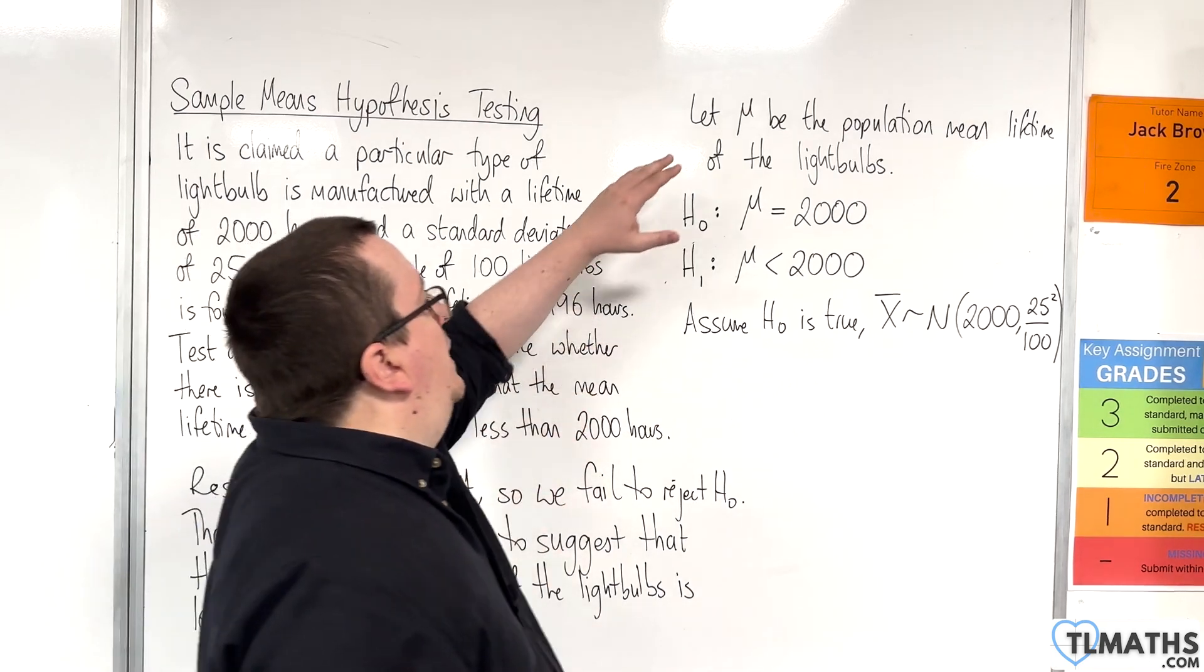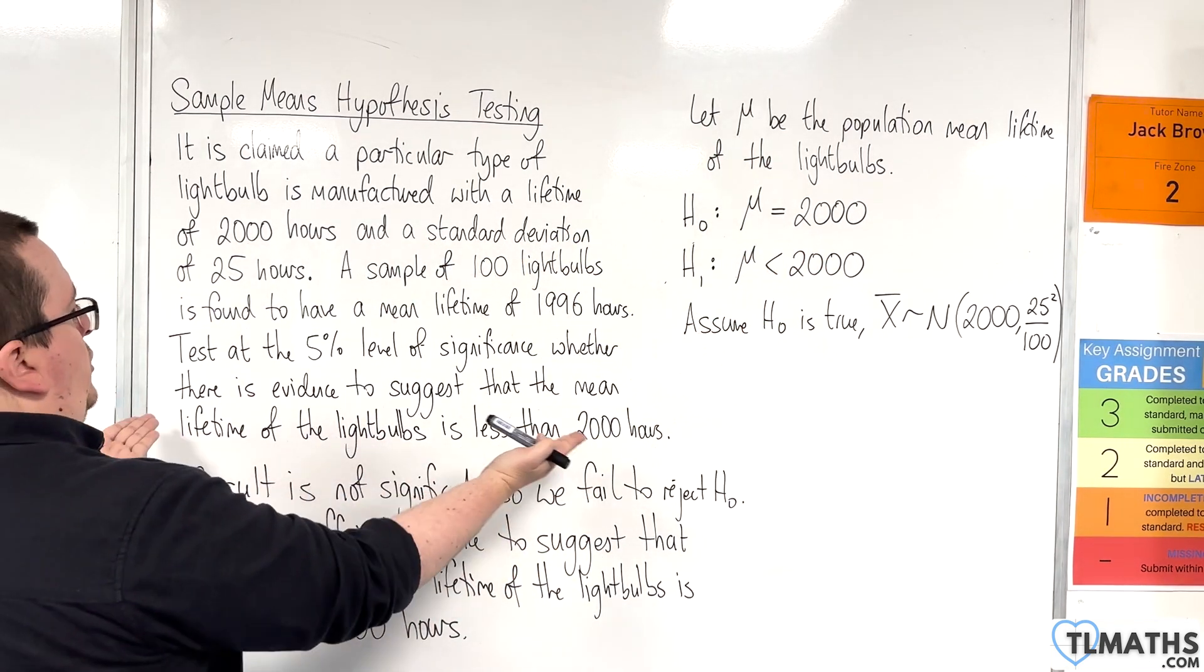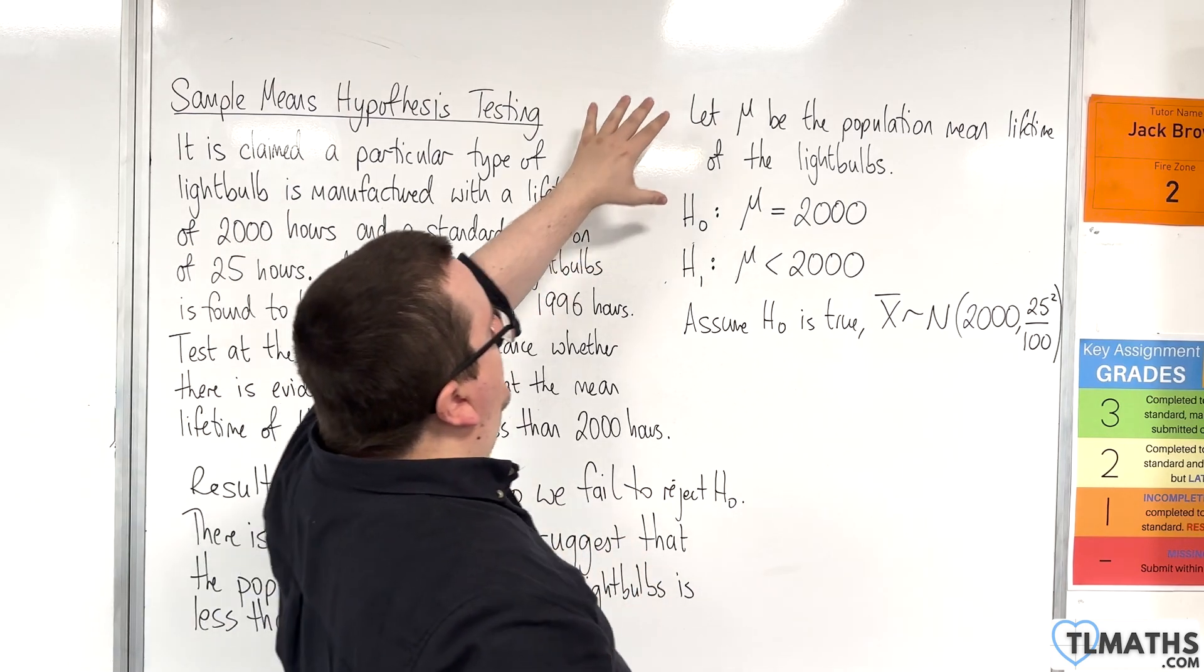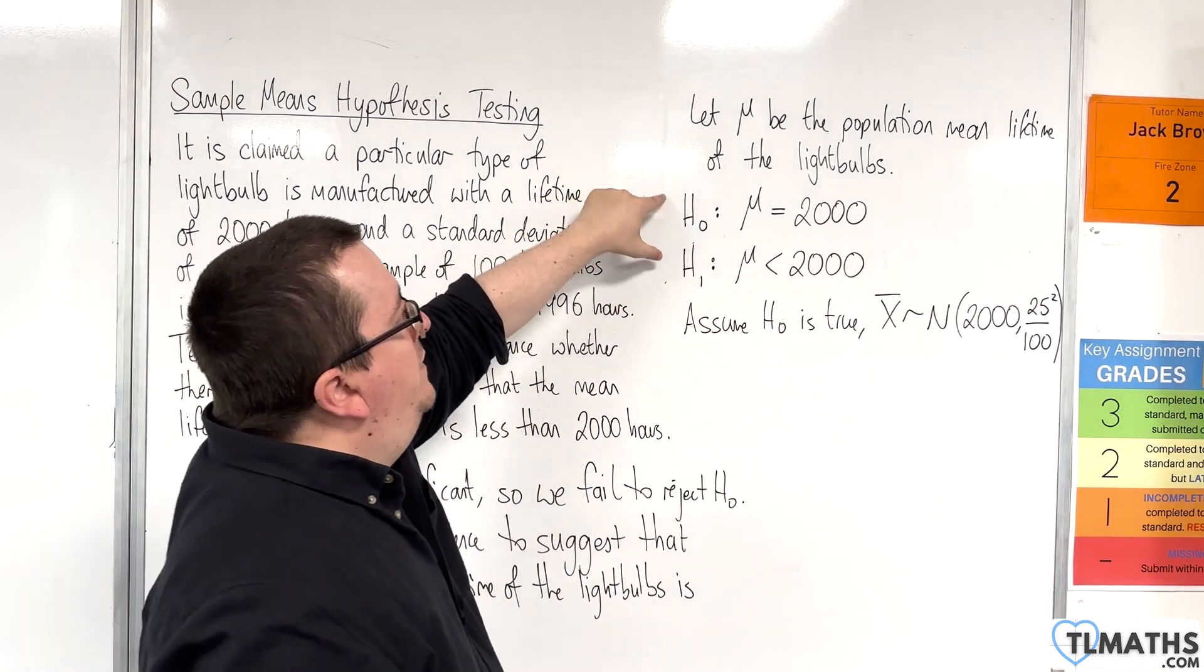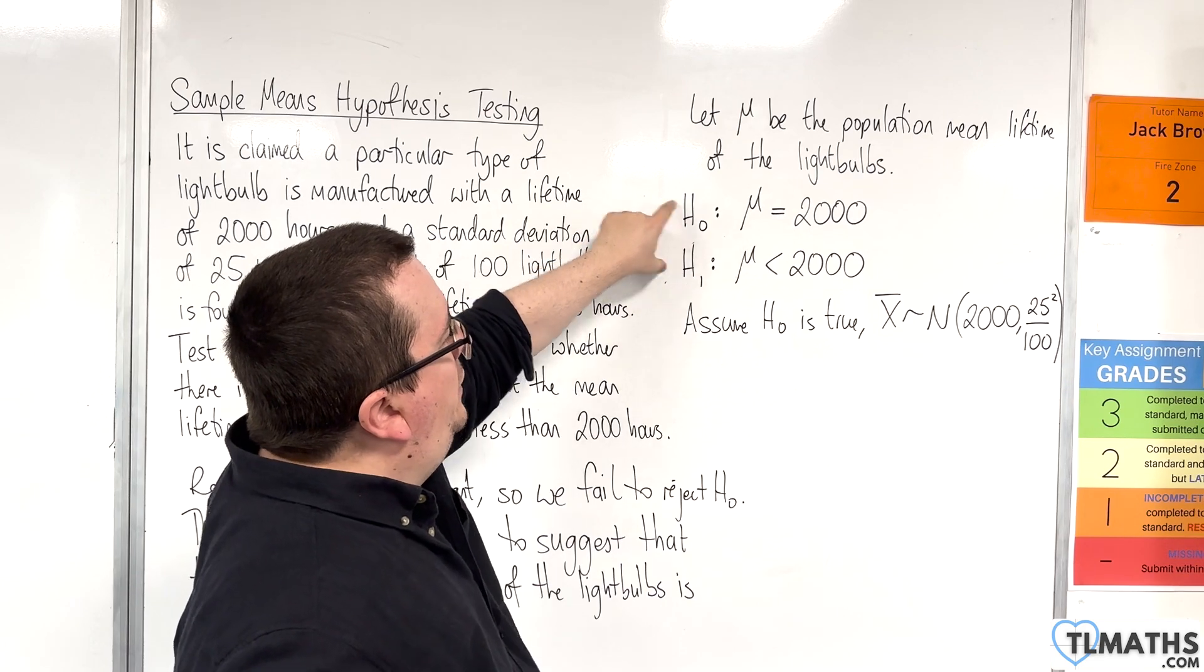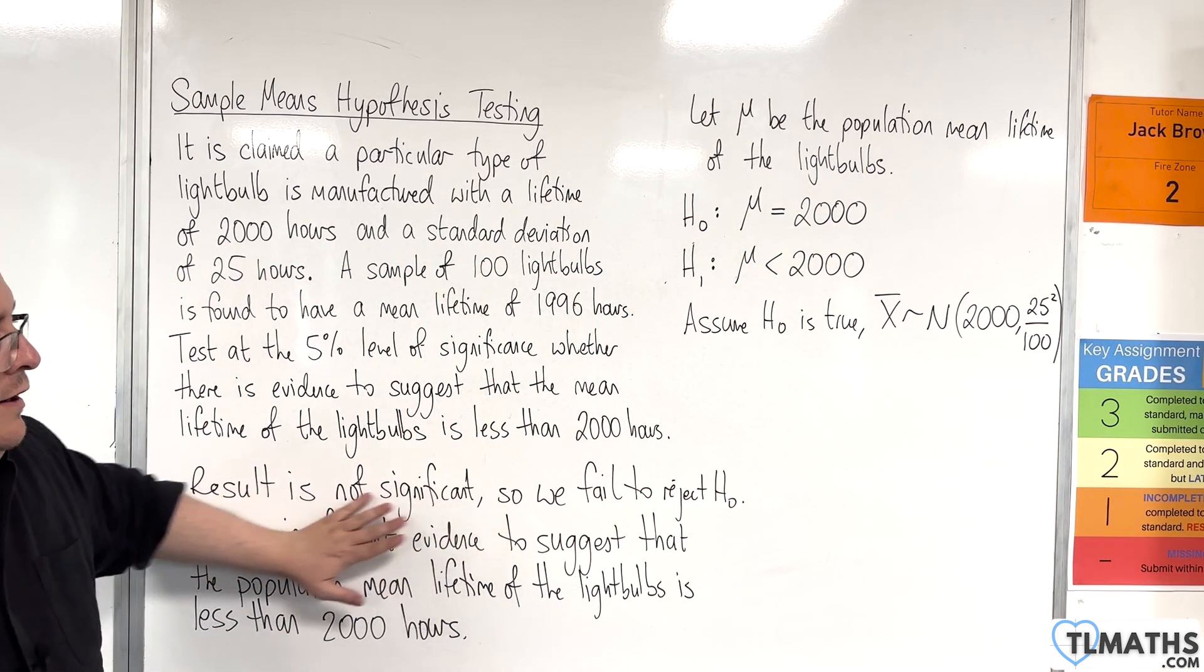I've saved everything that we had previously. So, here is your question. And we went through, let μ be the population mean lifetime of the light bulbs, the null alternative hypotheses, we set up the sample means distribution, and then we've got our conclusion.